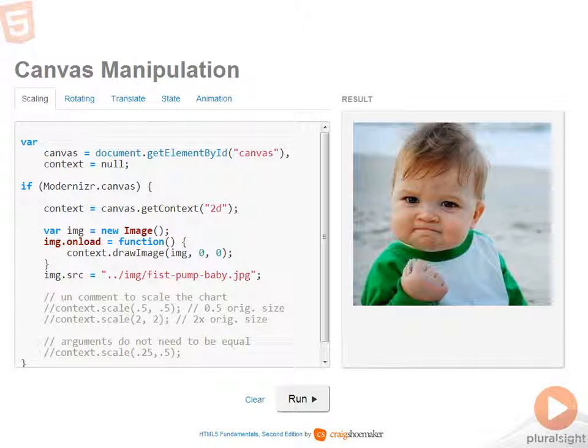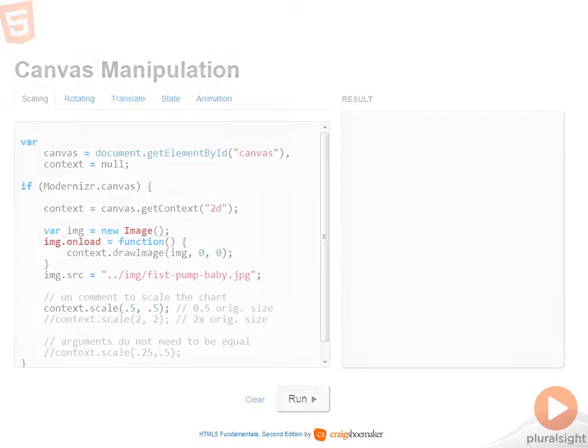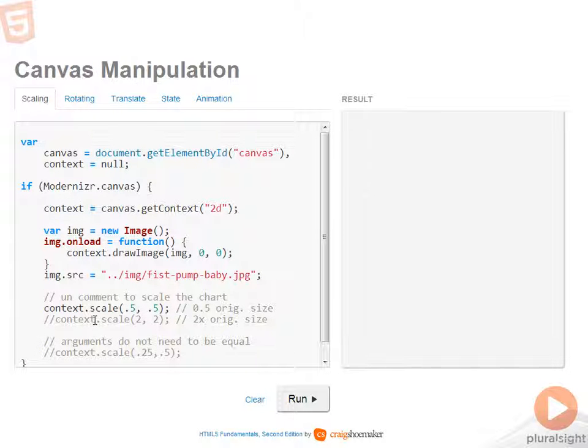So now let's take a look at how uncommenting some of these scale commands will change how the image shows up within the canvas. So I'll refresh the page. And now context dot scale is uncommented and I'm passing in point five point five to make it half of its original size.